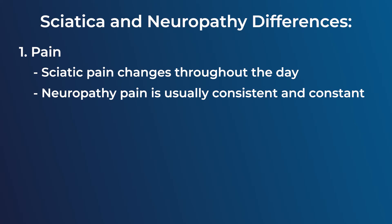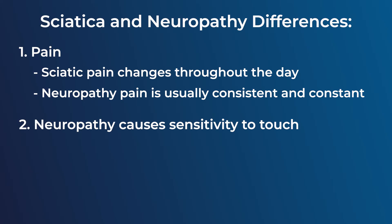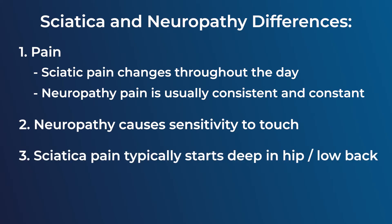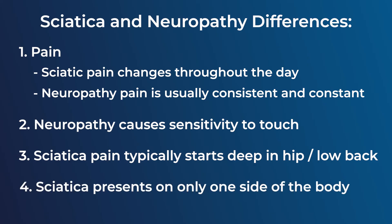With neuropathy you may have sensitivity to touch, which can manifest itself by putting on socks, shoes, or gloves. Sciatica typically presents with pain that starts deep in the hip or in the low back and will travel down the path of the nerve into the hamstring, calf, and to the bottom of the feet. Sciatica also usually presents itself only on one side of the body, so you're typically not going to have sciatica-like symptoms on your right side and your left side.